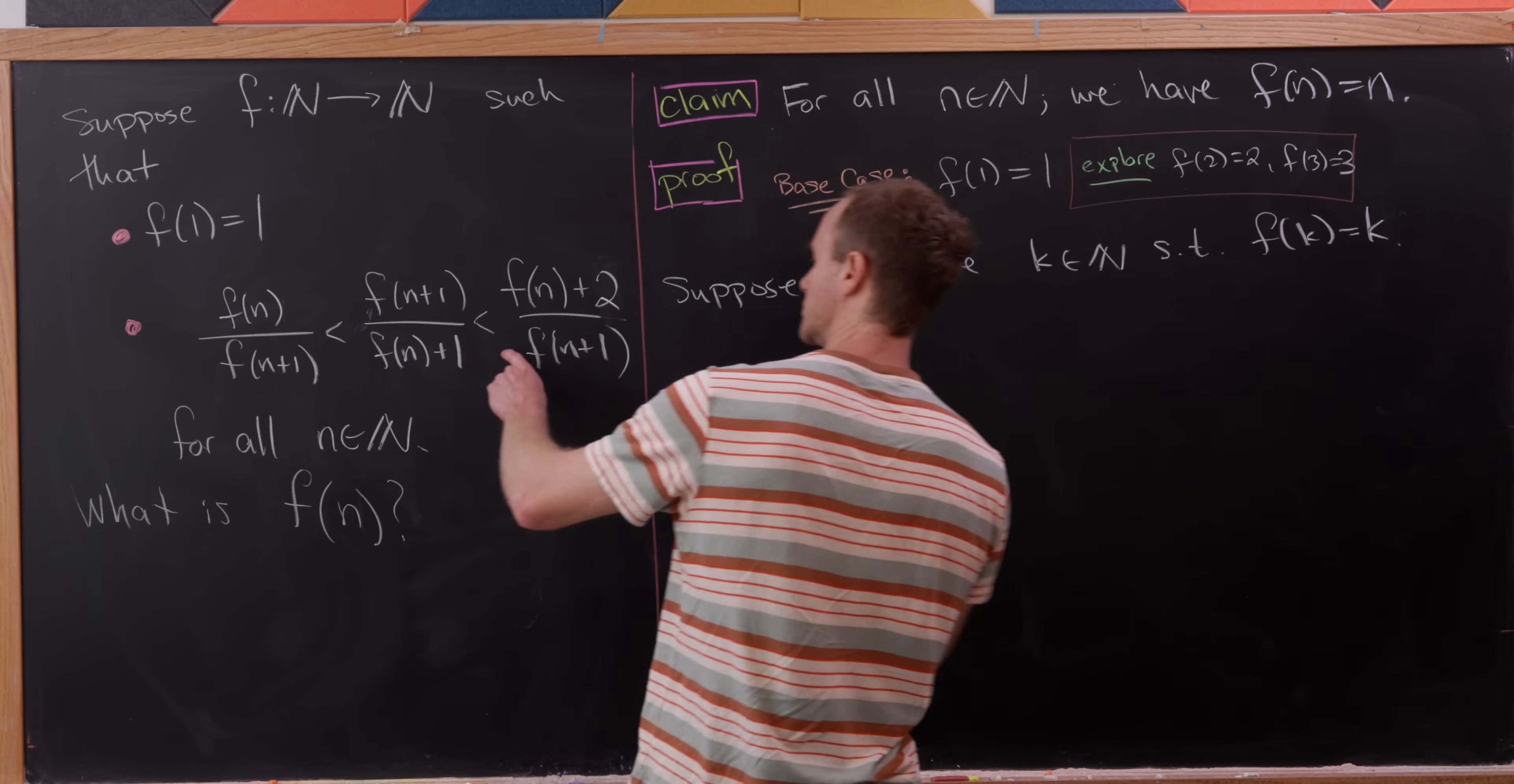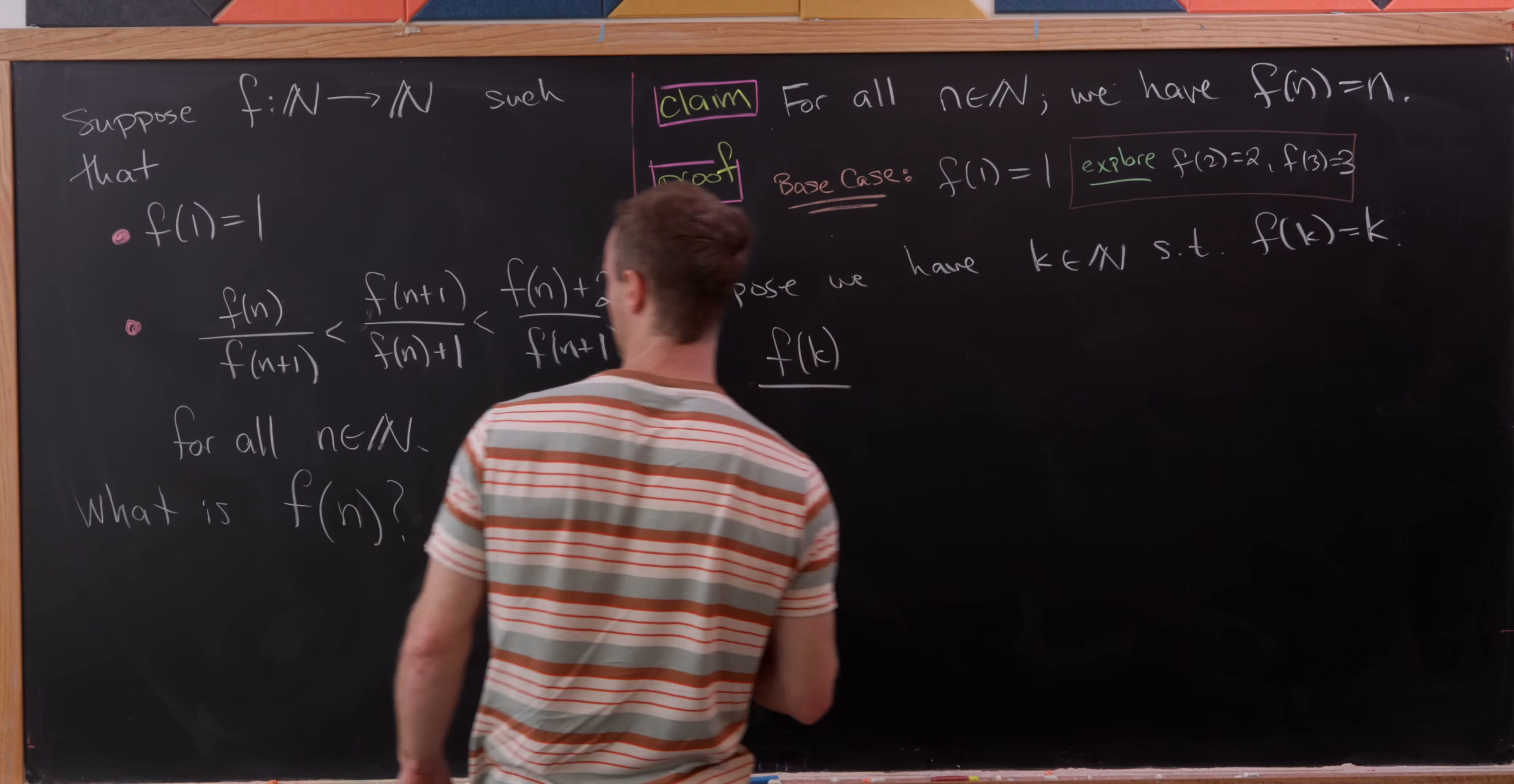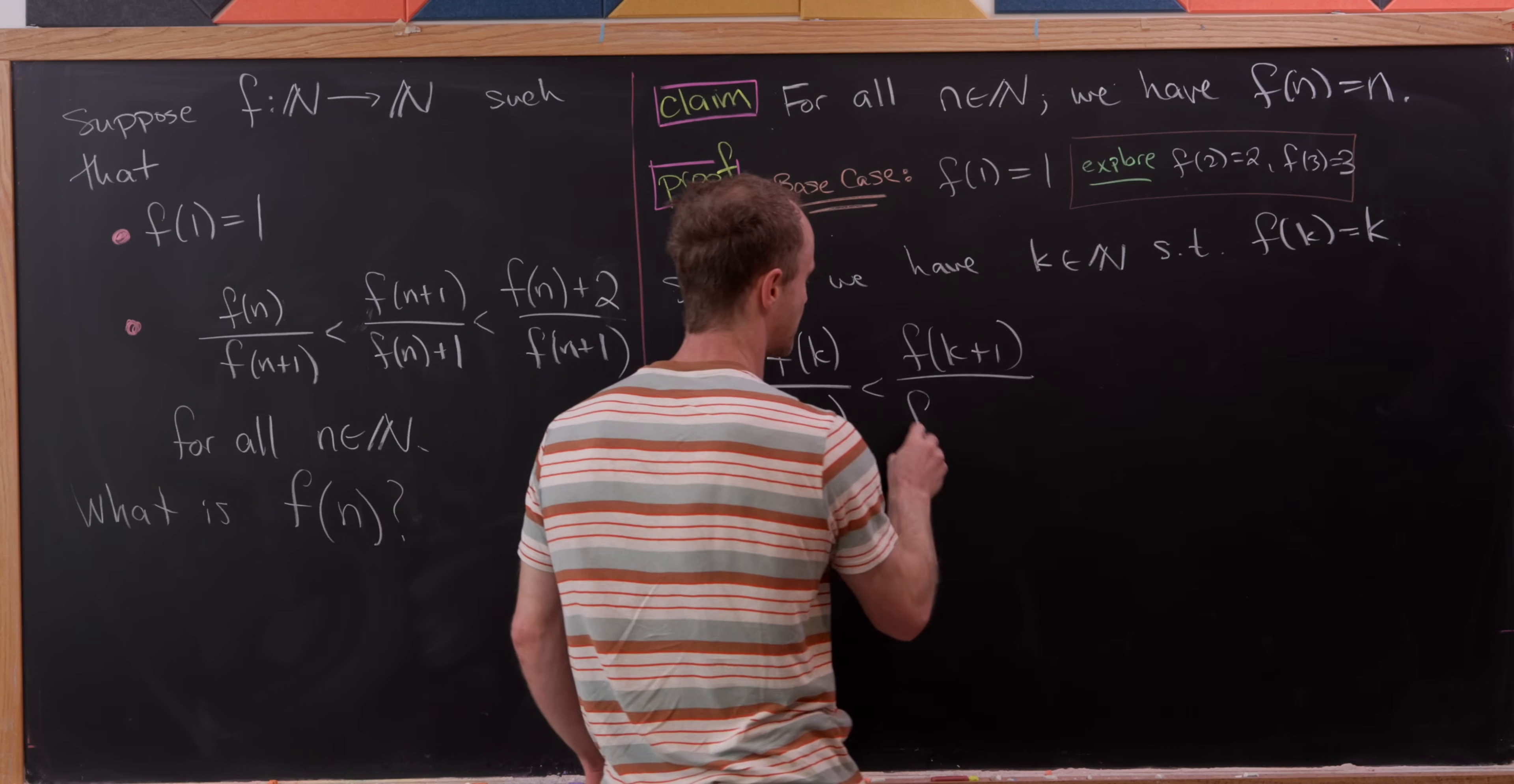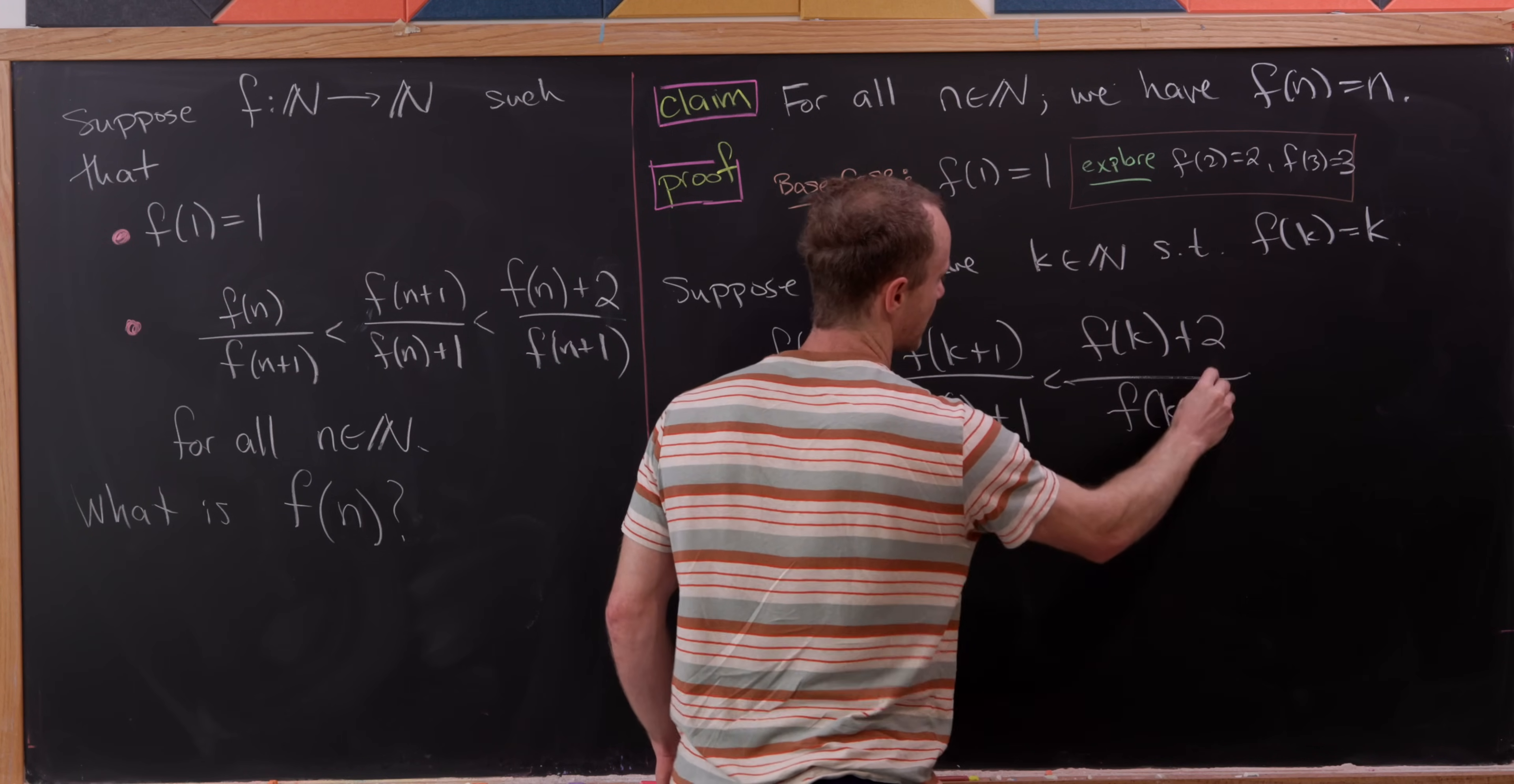So what we want to do is plug n equals k into our functional inequality. I'm just going to write it as is without maybe using our induction hypothesis over here first. So we've got f of k over f of k plus one is less than f of k plus one over f of k plus one, which in turn is less than f of k plus two over f of k plus one.